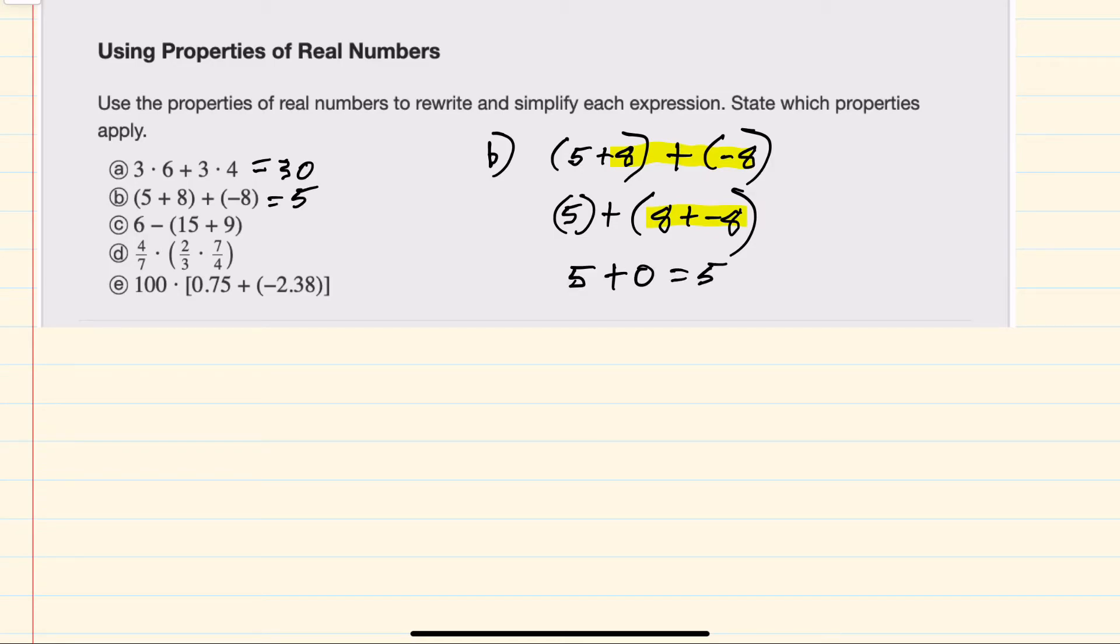And then for C, I wouldn't use the associative property here because of the subtraction, but I can use distribution where I am distributing that negative 1. So negative 1 times 15 would be a minus 15,